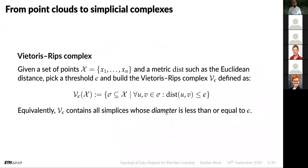Moving from a point cloud to a simplicial complex is actually something that goes back a long time — over 100 years. Even before computers, people thought about these things. We will calculate something called a Vietoris-Rips complex, and we will see a lot of examples for this.